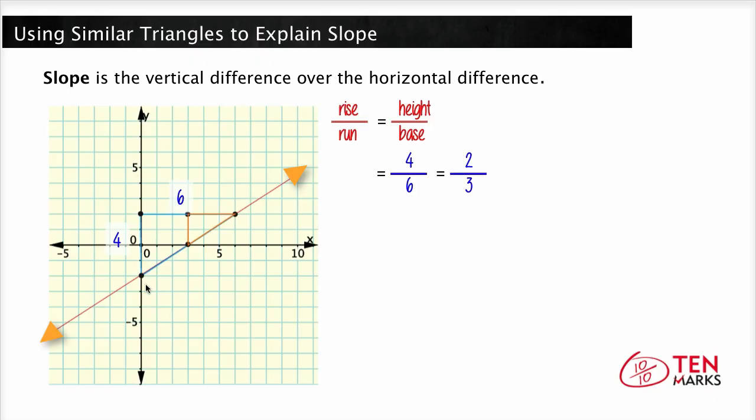To show that the slope is the same between any two points on the line, look at the second triangle. Now here, the height is 2 and the base is 3. So the slope again is still 2 over 3.